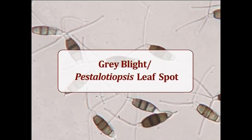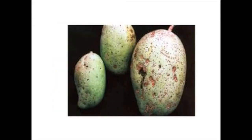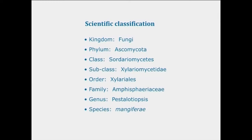The next disease is gray blight or Pestalotiopsis leaf spot, reported from many states in India. The pathogen produces brown spots at the margins and tips of the leaf lamina. Small brown spots can also be seen on fruits with a grayish-white center, later turning into larger lesions. A large number of acervoli appear as black dots. Classification: Kingdom Fungi, Phylum Ascomycota, Class Sordariomycetes, Subclass Xylariomycetidae, Order Xylariales, Family Amphisphaeriaceae, Genus Pestalotiopsis, Species mangiferae.